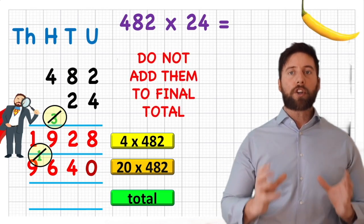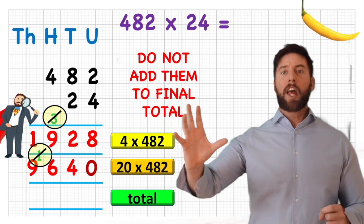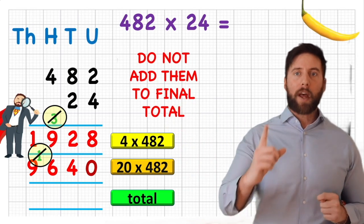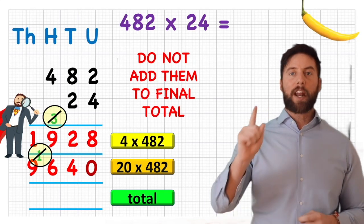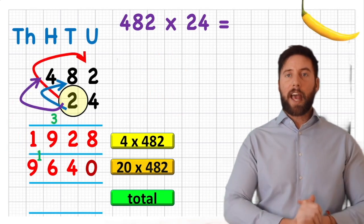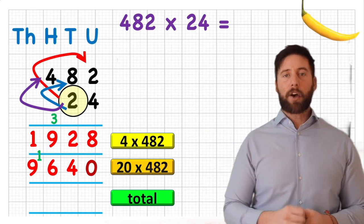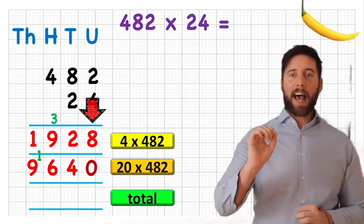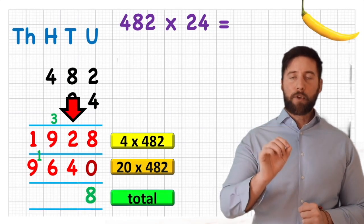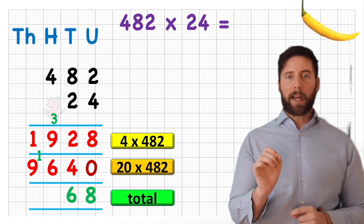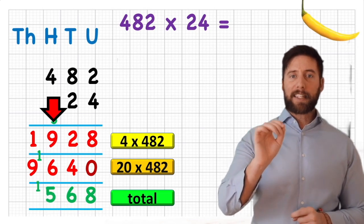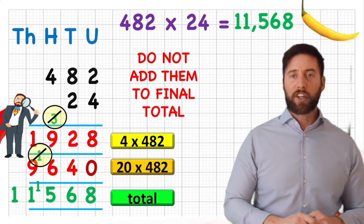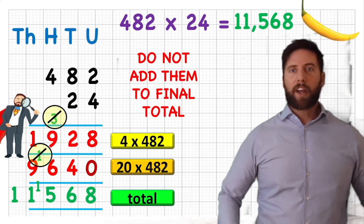Something really important: those small carried digits that helped us solve previous parts of the question — we should put a line through them when we're finished, and we must not add them to our total because they've already been used. Now let's add the rows together: 8 and 0 is 8, 2 add 4 is 6, 9 add 6 is 15 — carry the 1, put 5 in place — then 1 add 9 is 10 plus the 1 is 11. So 482 times 24 is 11,568.